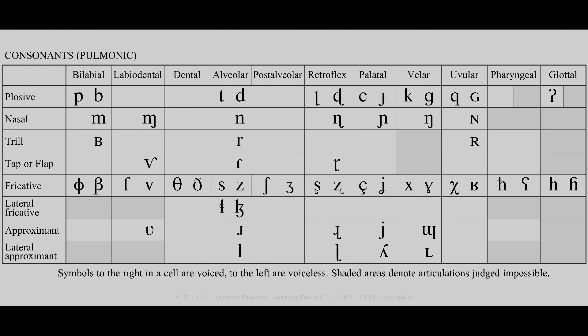If you know the place and mode of articulation of any consonant, in theory you should be able to pronounce it. One thing to be aware of: when grid spaces have more than one letter, the letter on the left is unvoiced and the letter on the right is voiced. In voiced sounds the larynx vibrates when the sound is pronounced; in unvoiced sounds it does not. You can feel this yourself — place your palm against your throat so you can feel your Adam's apple, then say an F sound and turn it into a V sound and back again. You'll notice an extra vibration when saying V — that's because you're passing air over the structures of your larynx to make them vibrate. That is what it means to voice a sound in phonetics.